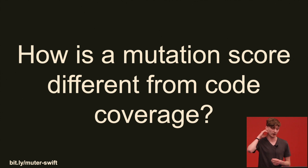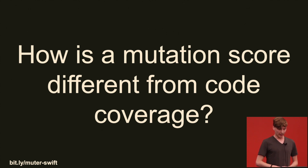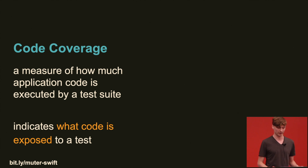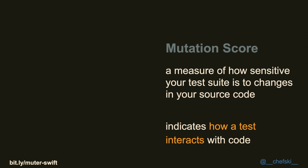If you pay attention to automated testing, you may ask how a mutation score differs from code coverage. Code coverage is an indicator of what percentage of your code is exposed to your test suite — that's it. It's possible to have 100% code coverage and a zero mutation score, because a mutation score is a measure of how your test suite interacts with your production code. If all you do is have a UI test that walks through every part of your app but never makes an assertion, you can have 100% code coverage but a zero mutation score. The second you add an assertion, you won't have a 0% mutation score.